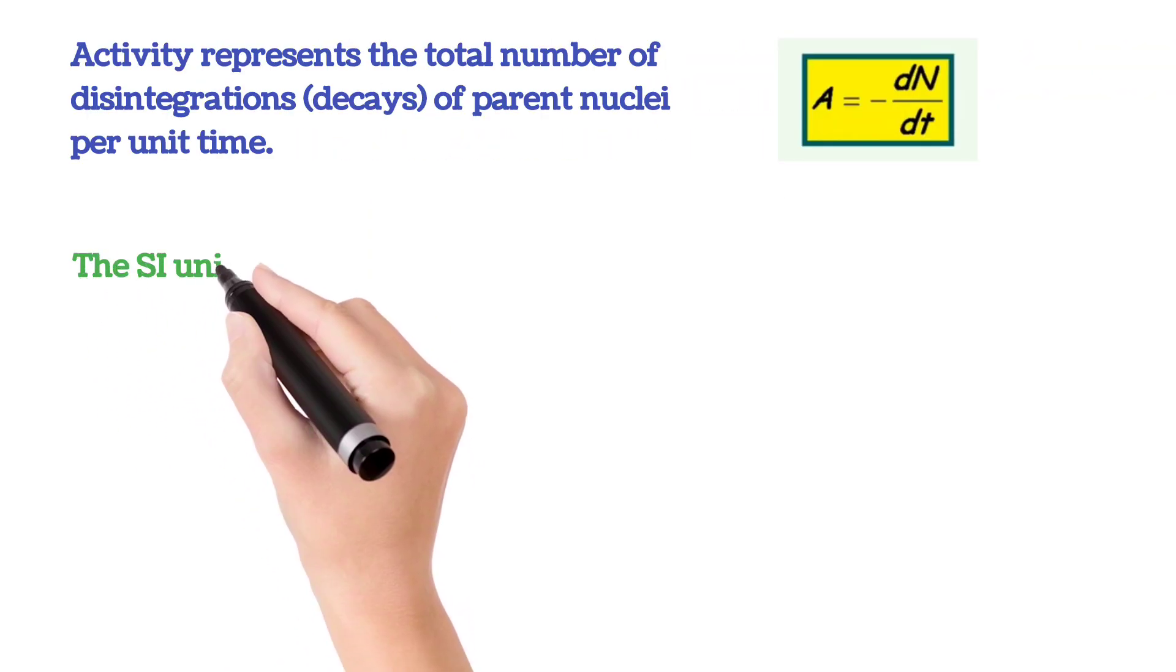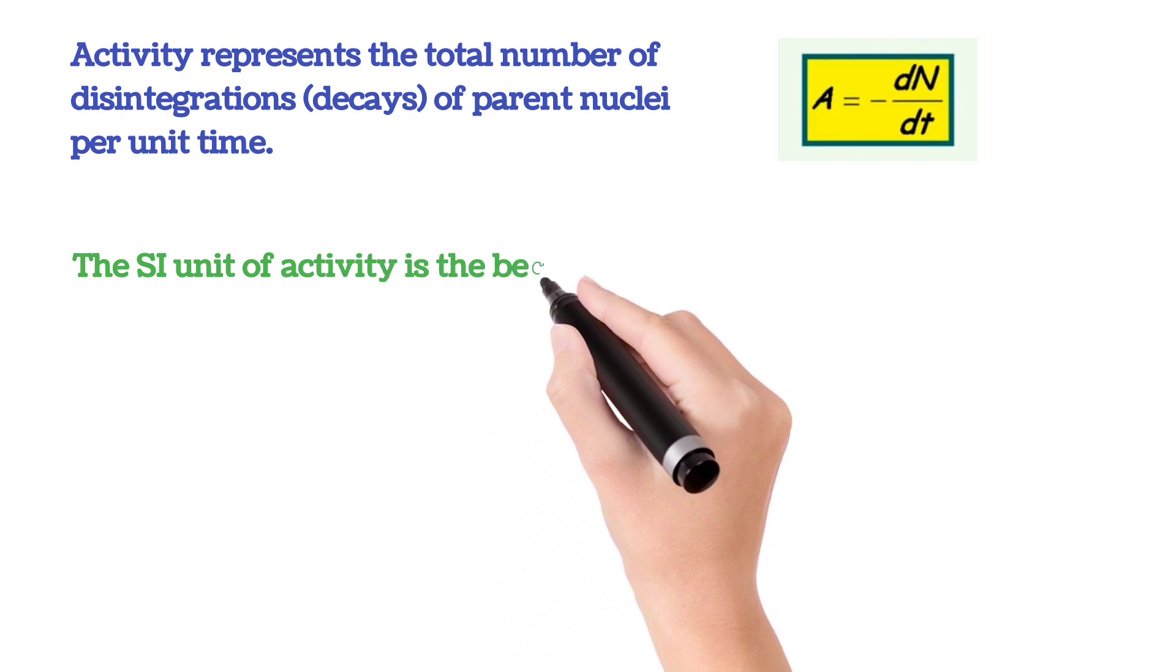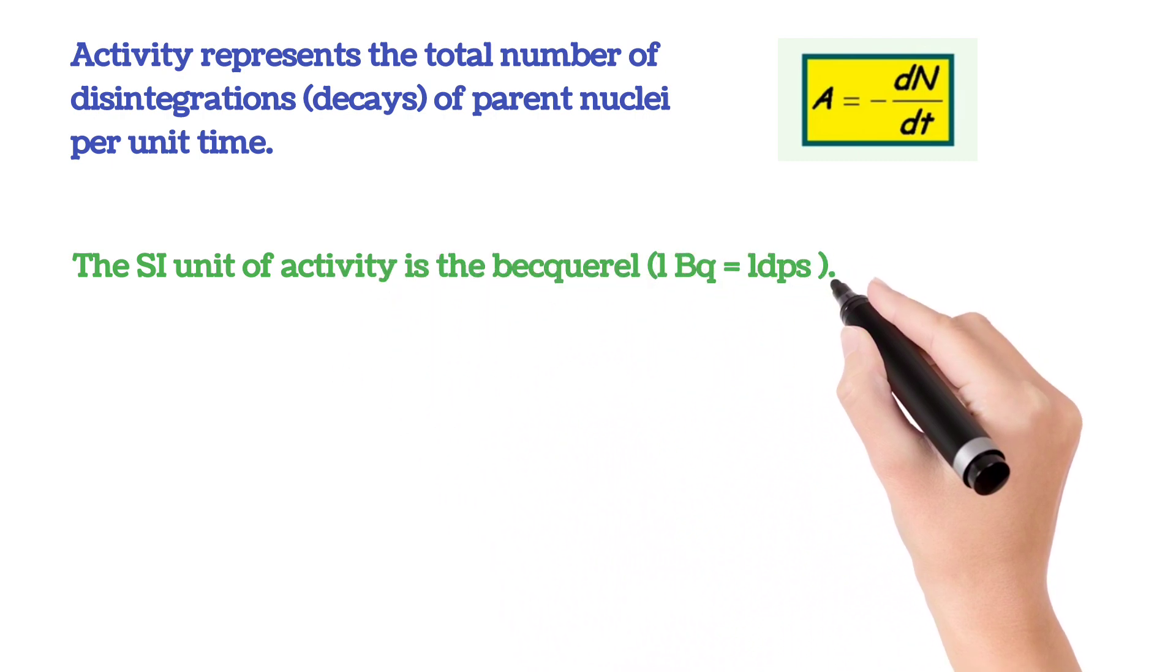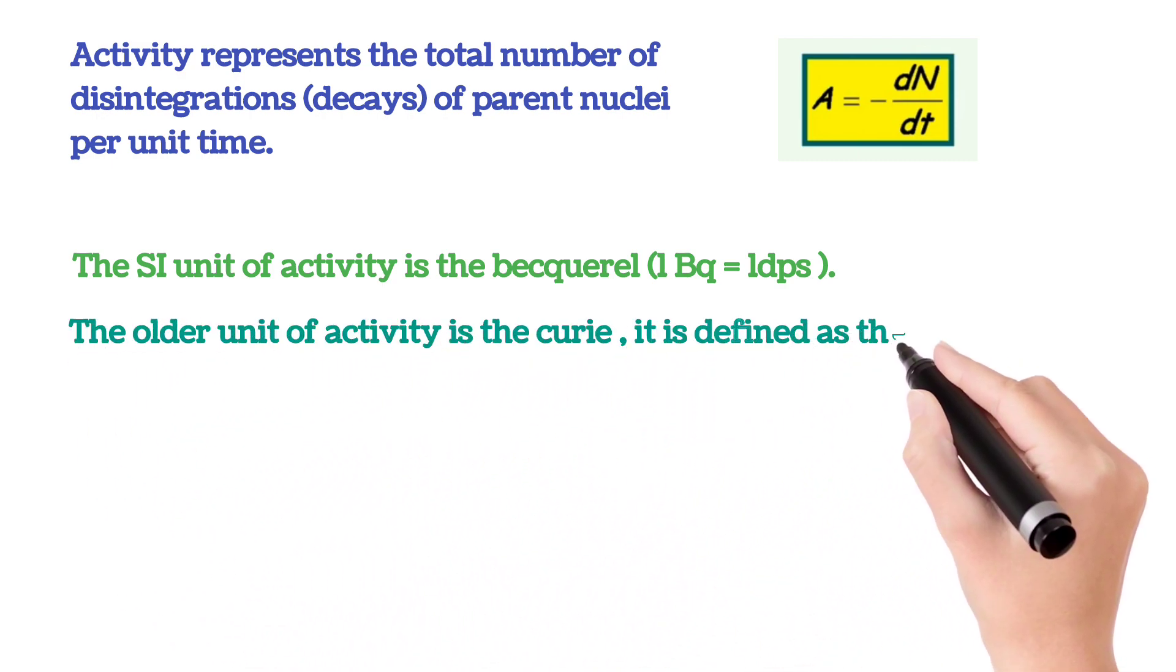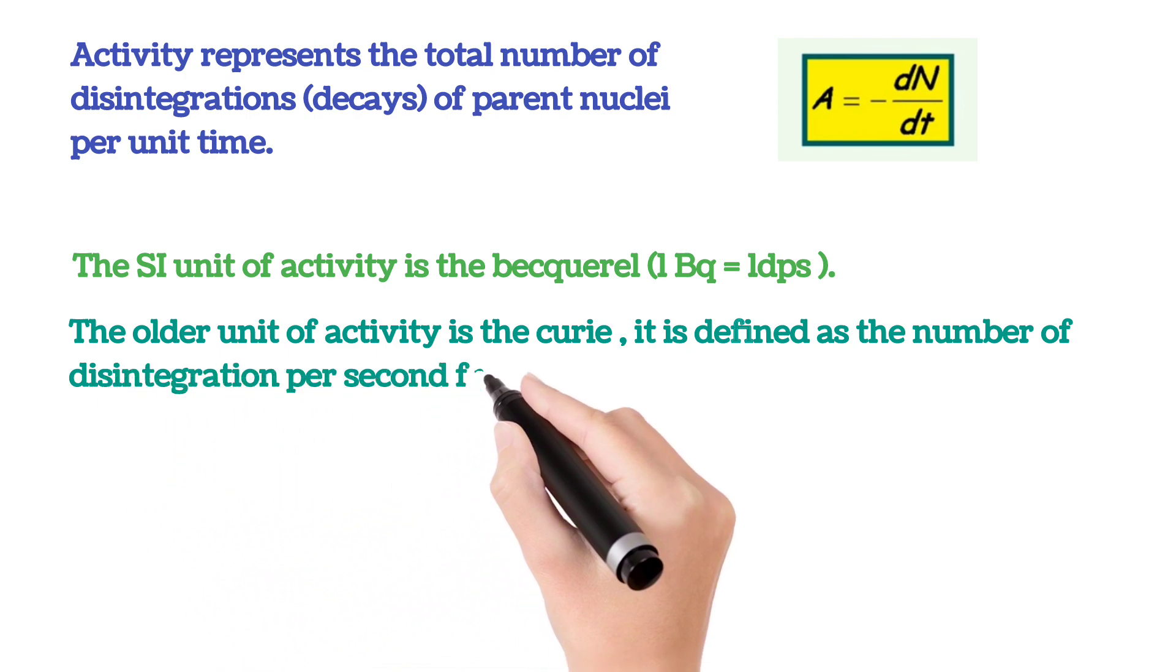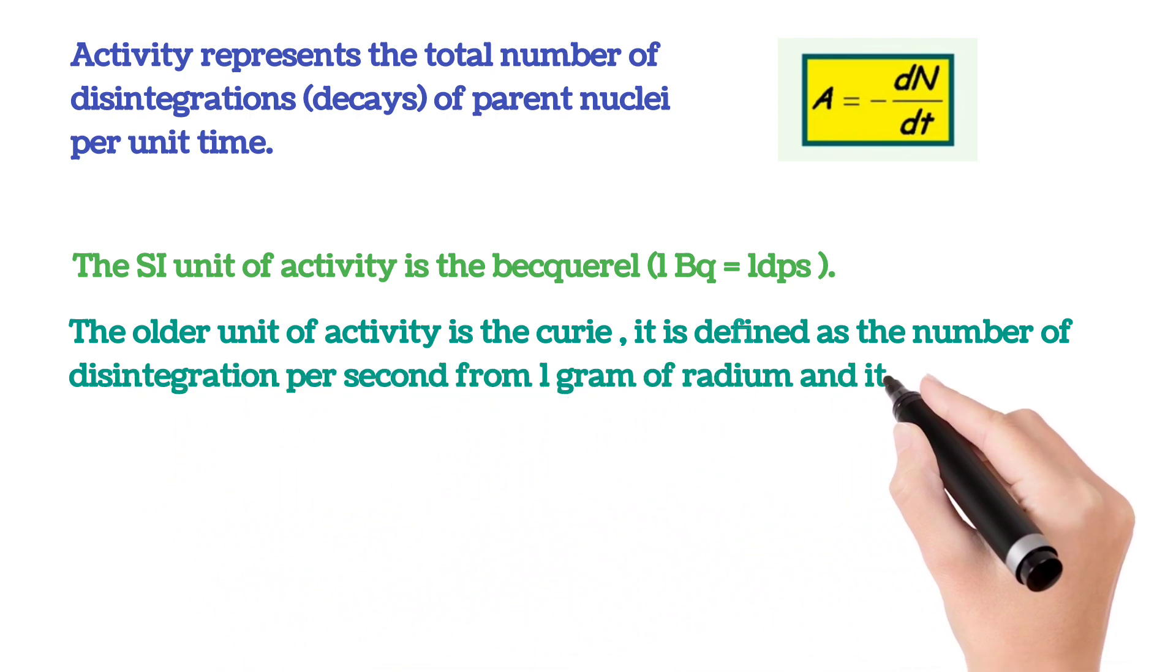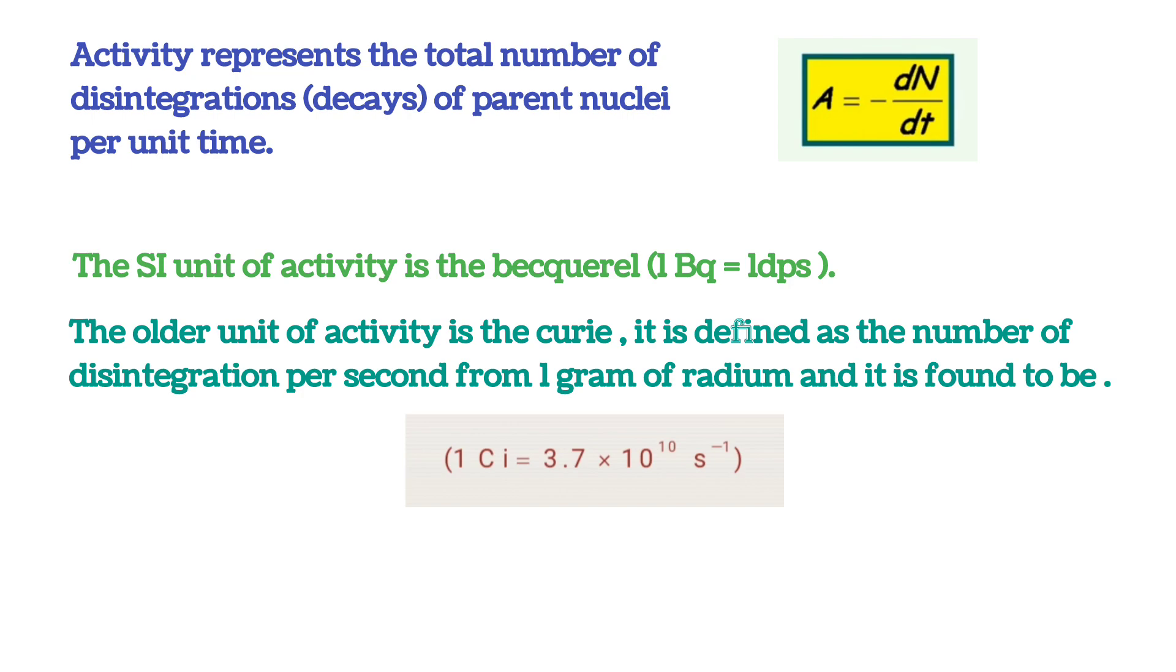The SI unit of activity is the becquerel. 1 becquerel equals 1 disintegration per second. The older unit of activity is the curie, defined as the number of disintegrations per second from 1 gram of radium, which is 1 curie equals 3.7 × 10^10 disintegrations per second. Currently, the activity of 1 gram of radium-226 is 0.988 curie.